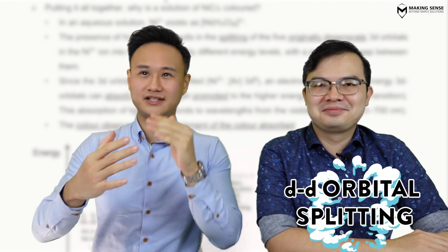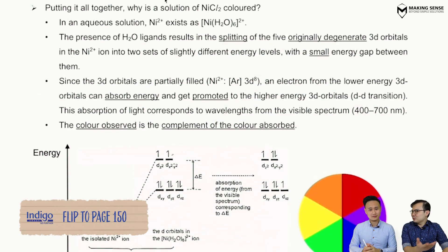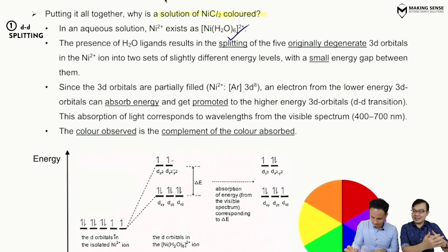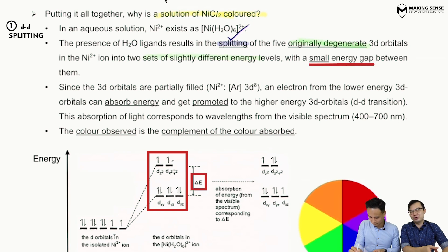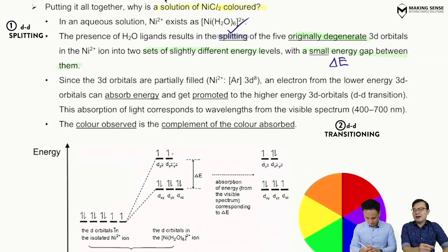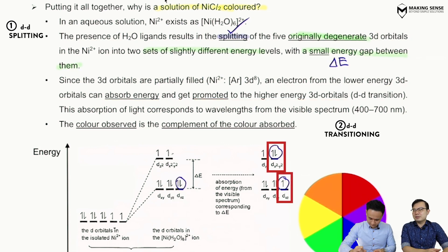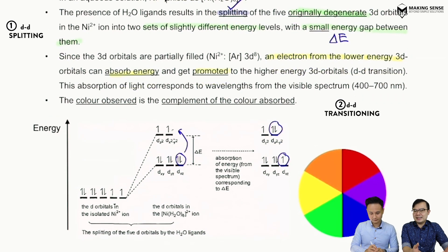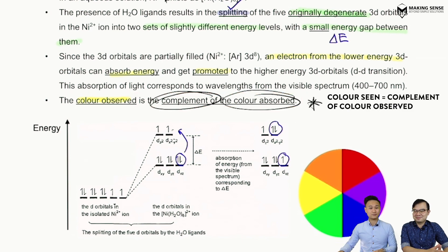For a three-mark exam question asking why a transition metal complex is colored: the first mark goes to d-d splitting — ligands approach the metal ion and split the 3d orbitals into two different energy levels, creating an energy gap ΔE. The second mark is d-d transitioning — when white light is shone, an electron from a lower energy level absorbs energy ΔE and is promoted to a higher energy orbital; this energy corresponds to a certain wavelength. For the final mark — the wavelength absorbed is not the color you see; the color complementary to the absorbed wavelength is the color that will actually be observed.